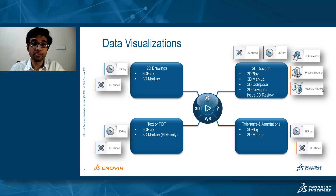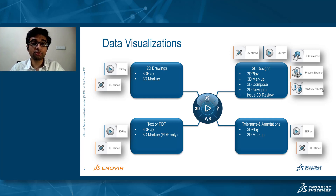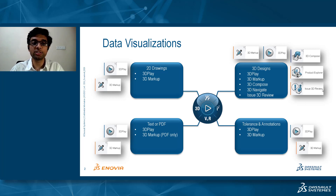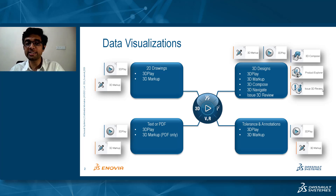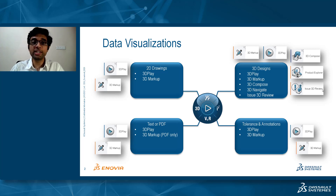Another set of data is text or PDF documents. In any business you encounter a lot of documents and need a tool to quickly visualize their content within the 3D Experience Platform itself. You can visualize text or PDF content in 3D Play as well as 3D Markup, and perform reviews and collaborate with colleagues to resolve issues. Looking across all these applications, 3D Play and 3D Markup support almost all data types — 2D drawings, 3D designs, text, and PDF — while 3D Compose, 3D Navigate, and Issue 3D Review are designed for specific predefined purposes.